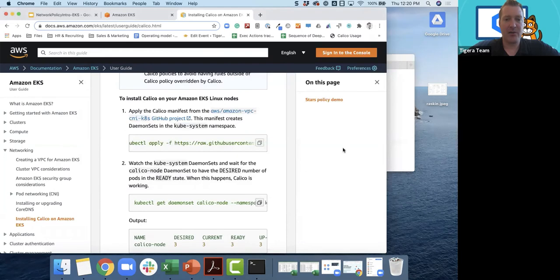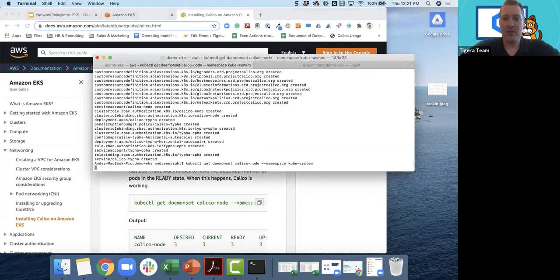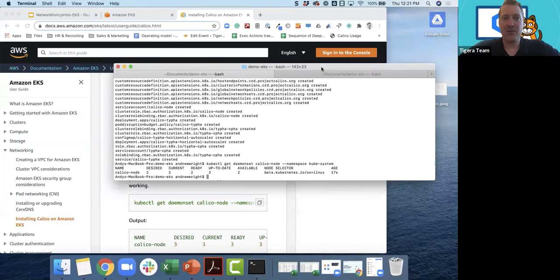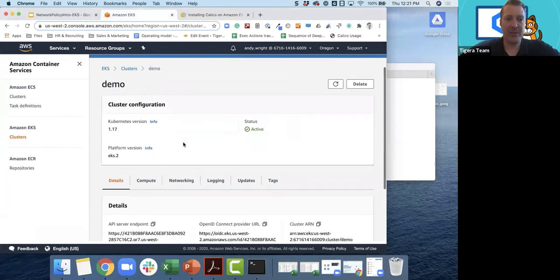I've got a terminal window here and I'll just go ahead and run this command. Calico should be installed. We can get the daemon set. So Calico runs as a daemon set, which means that it's always going to have one pod running on every node. What we can see is I've got two nodes out there, so we want it to be running on the two and two nodes are ready. So it looks like we're up and running. It was very fast to get Calico up and running on my EKS cluster.